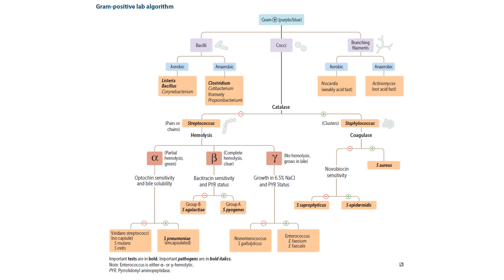In this video we're going to be going through the chart on page 132 of First Aid 2024 in order to go through an algorithm to identify gram positive bacteria through lab tests using visual mnemonics. There are three big categories we're going to go in depth into: the bacilli, the cocci, and the branching filaments. Let's start with the bacilli.